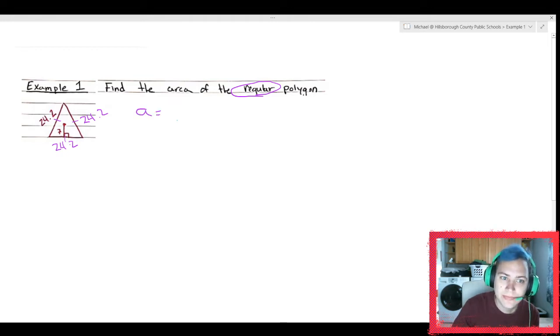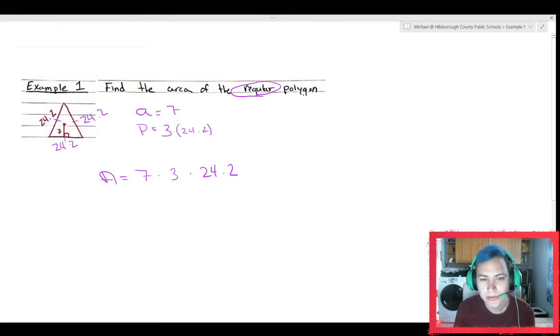Remember, apothems go from the center to the side and make 90 degrees, and the center to the vertices is the radius. So in this case, because it goes to the side, I know that's the apothem. So I know that little a is 7, and I know the perimeter is equal to all three sides added together. Because all three sides are the same, we could just take 3 times 24.2.